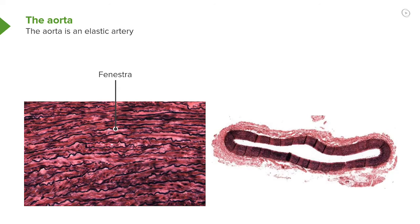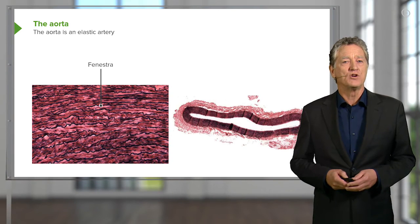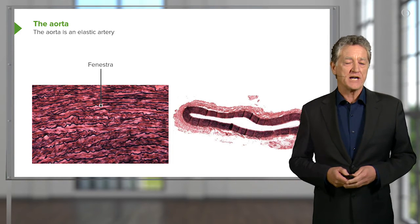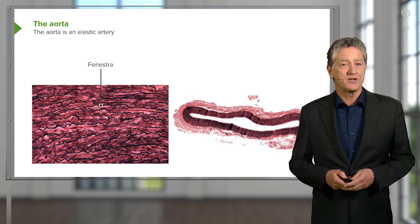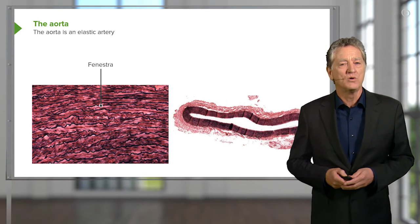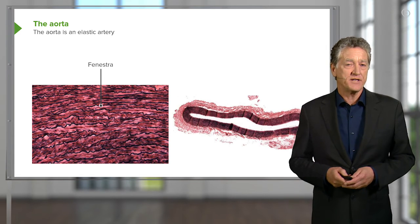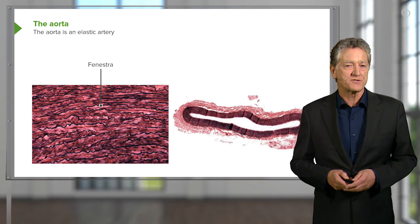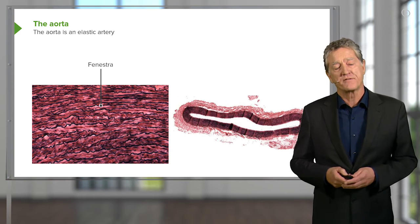That's important, because it's important to understand that a blood vessel gets its nutrition directly from the lumen. In some cases, very large vessels get their nutrition from vessels we call vasovasorum — vessels that come from the lumen or other vessels, and they penetrate the tunica adventitia, running along the junction between the tunica media and the tunica adventitia to supply the wall of the blood vessel. So these fenestrations are important because they allow the diffusion of nutrients, oxygen, et cetera, through the depths of the wall of the blood vessel.